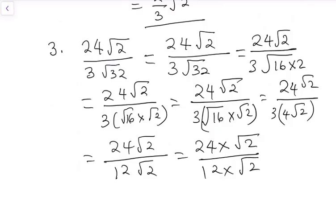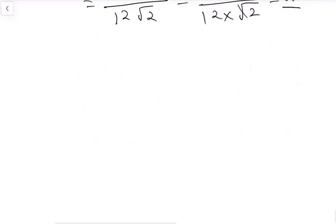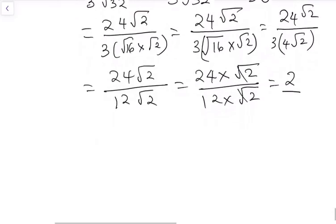We can now separate them as 24 times root 2 over 12 times root 2. Square root of 2 and square root of 2 cancel out. And 12 goes into 24 twice, so our final answer equals 2. You can always pause the video, rewind, and check again.